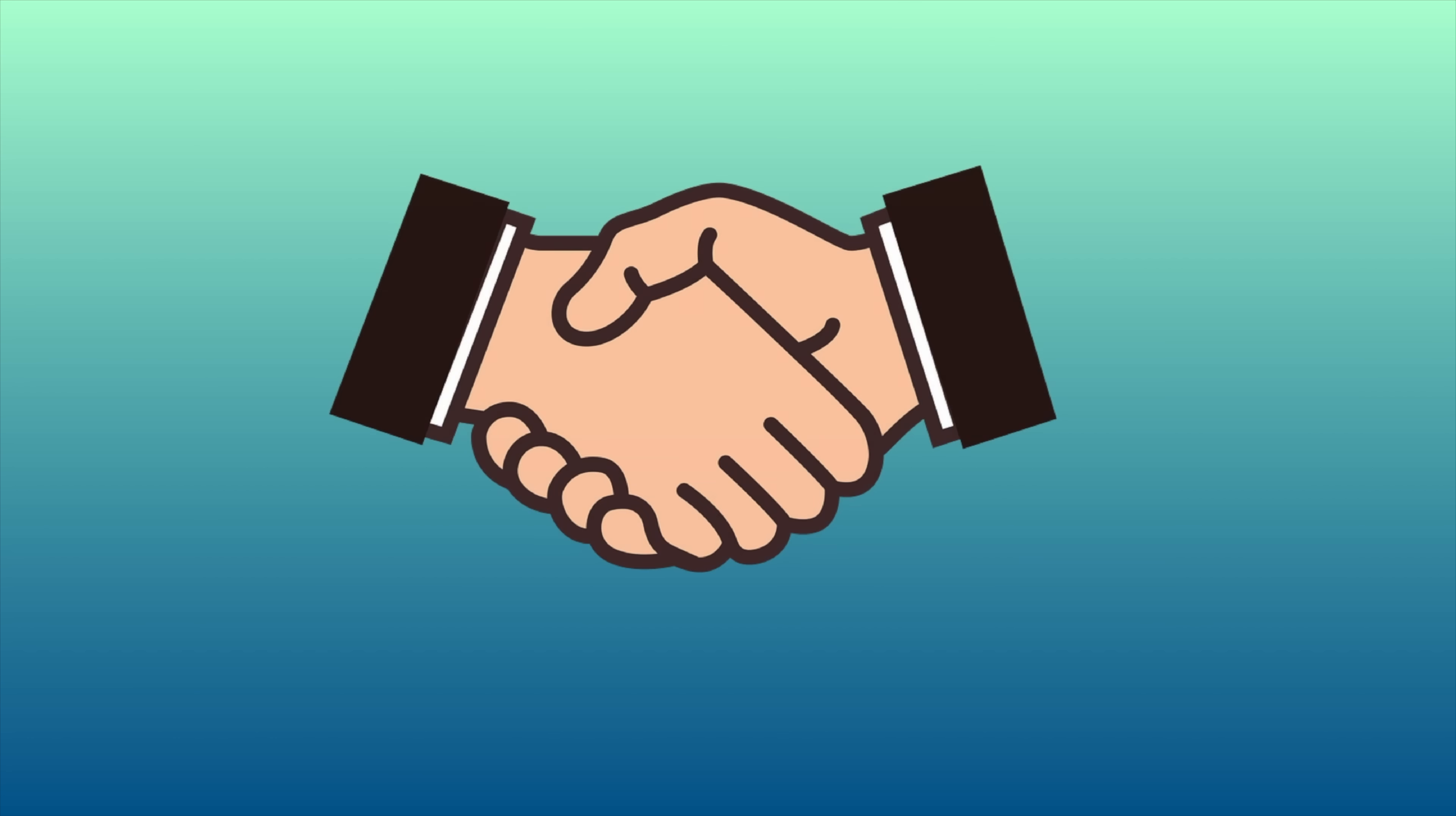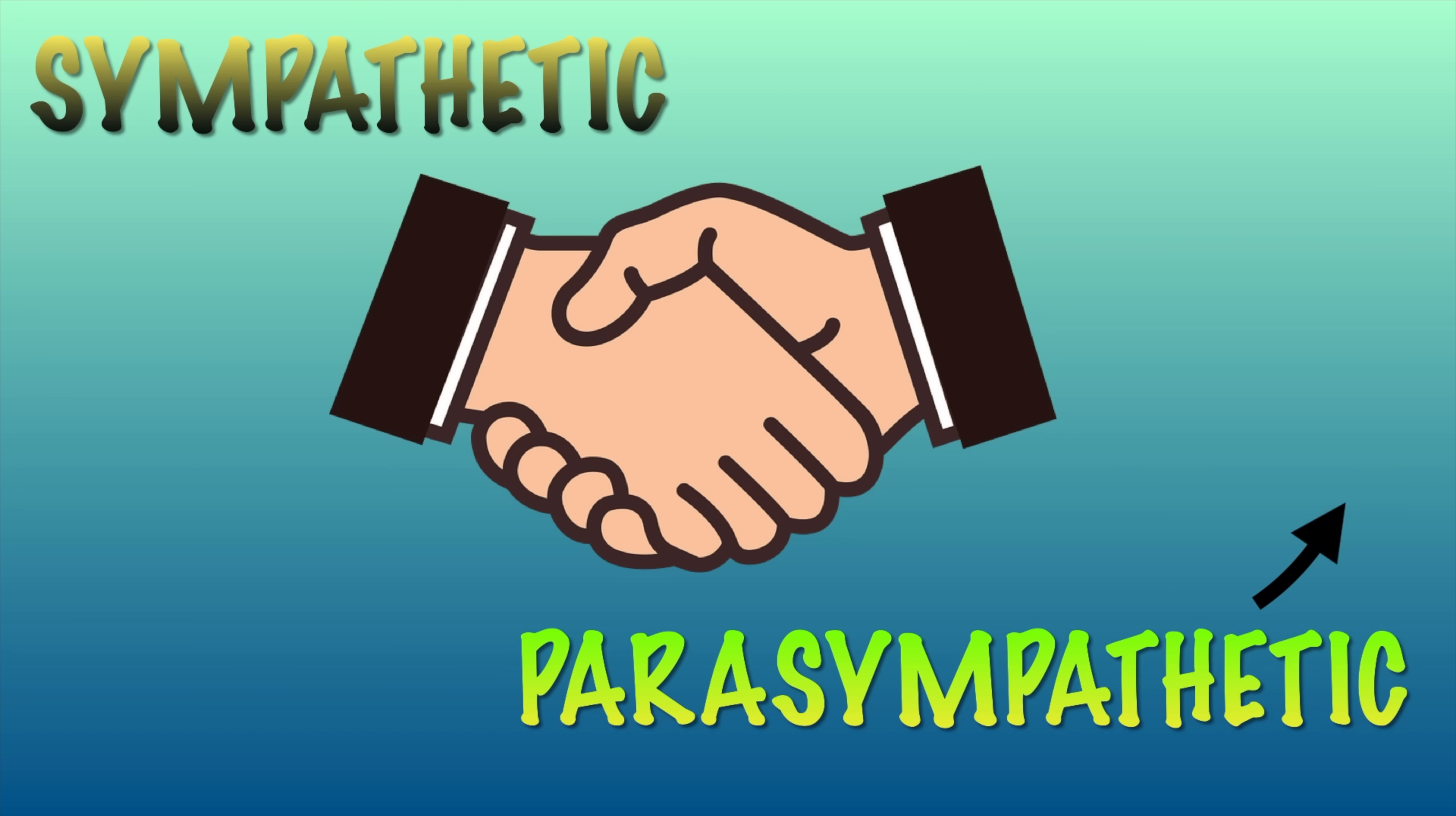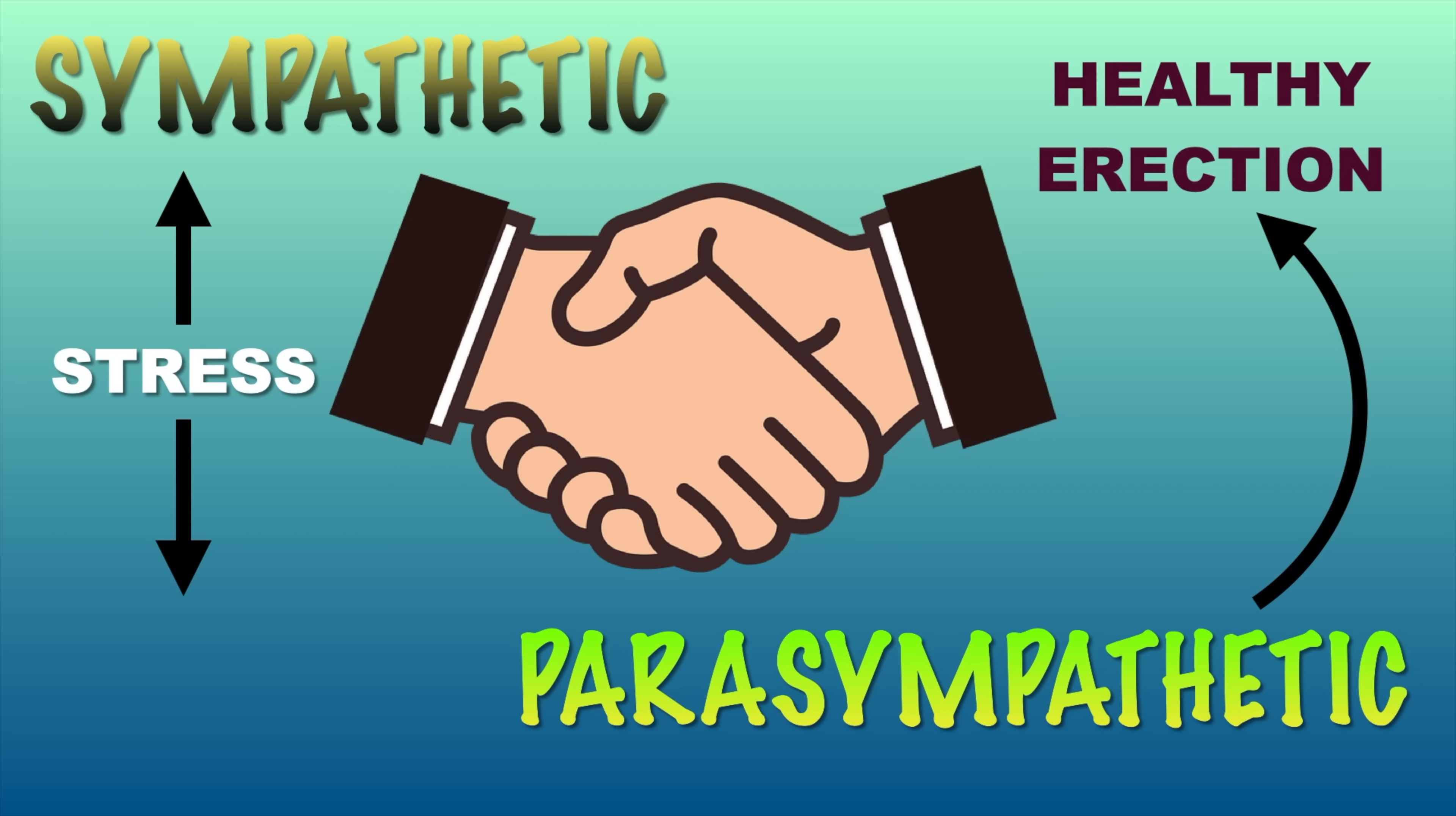There are two systems working together in our body. One is the sympathetic system and the other one is the parasympathetic system. For a healthy erection your parasympathetic system should be activated. But when you are in stress your sympathetic system primarily dominates.